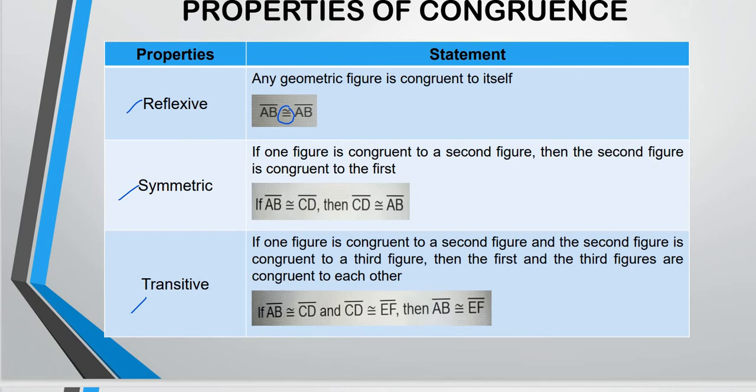And how about symmetric? If one figure is congruent to a second figure, then the second figure is congruent to the first. This is symmetric. So say that AB is equal to CD. Then CD is equal to AB. And then it is symmetric.